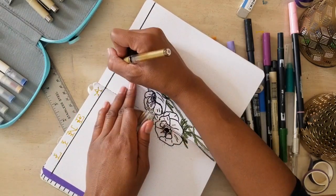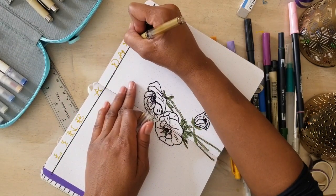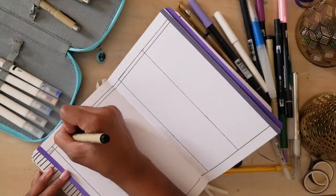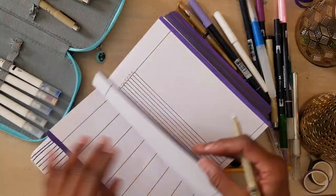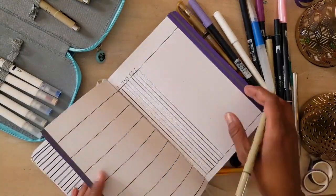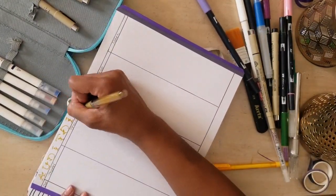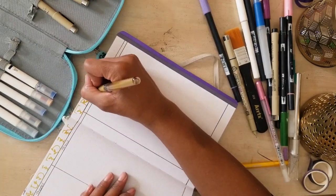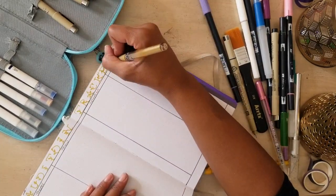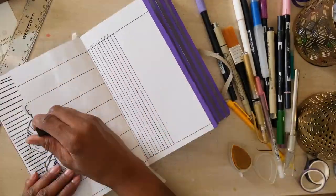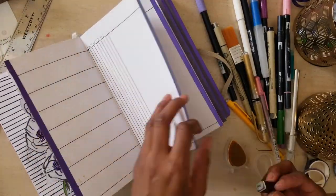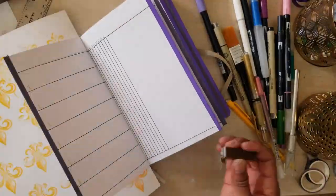I'm going in with my Uni-Ball Signo Metallic pen. I love this pen. And I am using the same font, but in miniature, on these other pages. So this month, I worked mostly out of order. I didn't necessarily do one thing at a time. I really just sort of flowed and did what I felt I needed to.